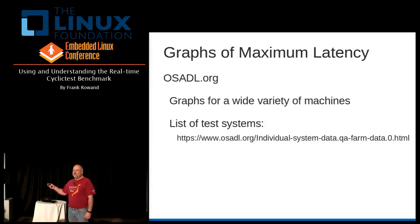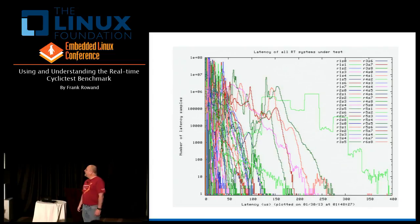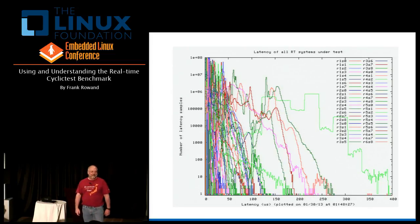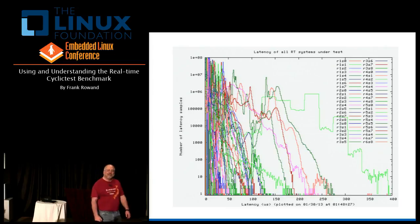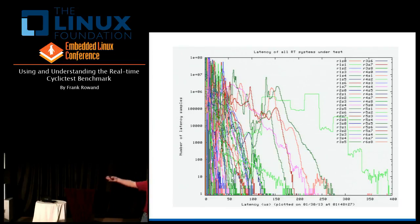This is what all their machines running in a given day look like — that's what a typical cyclic test result looks like. There you go.